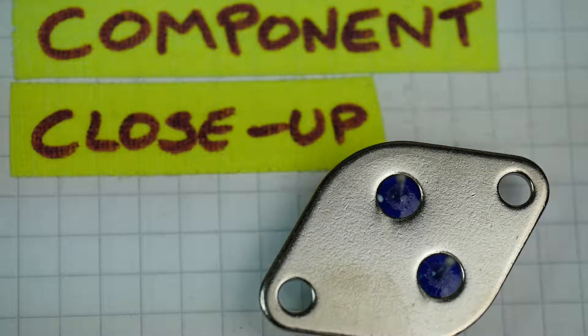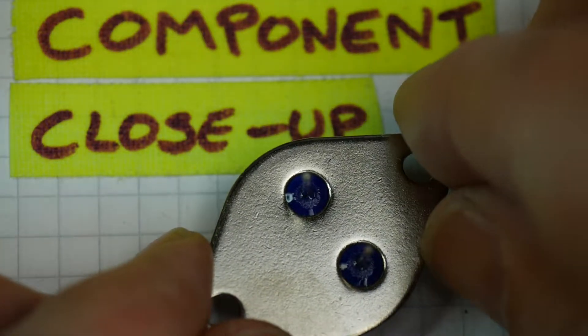On Component Close-Up recently we've had a look at some components that look a bit like vacuum tubes or valves but they're not. We had a look at one that was a quartz crystal and one that was a light dependent resistor. Let's have a look at some semiconductors. I thought we'd take a look at some power transistors today.